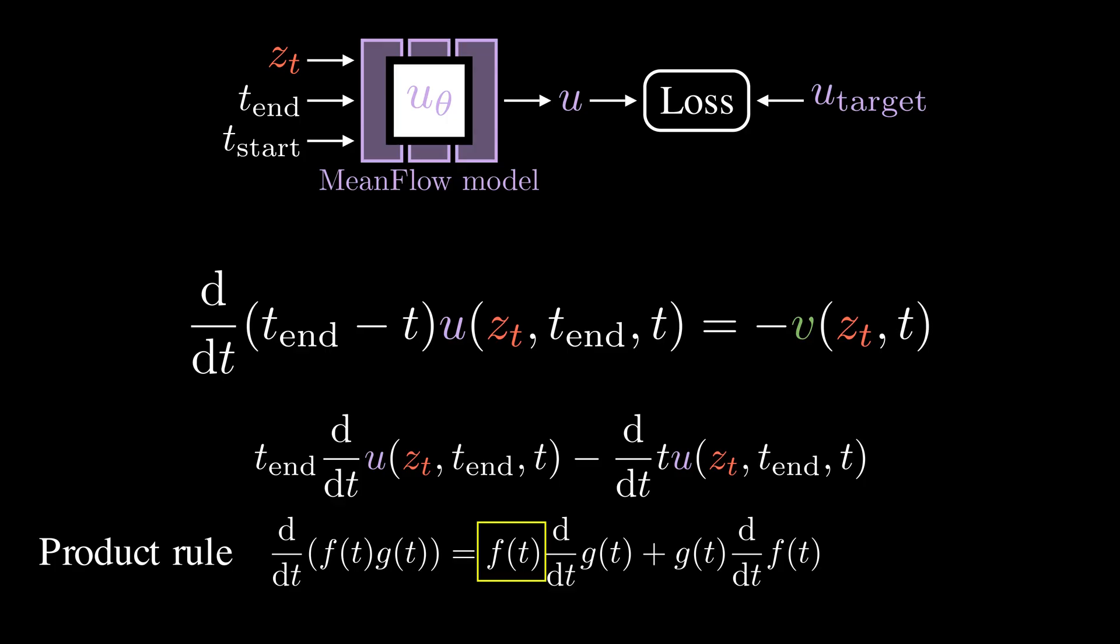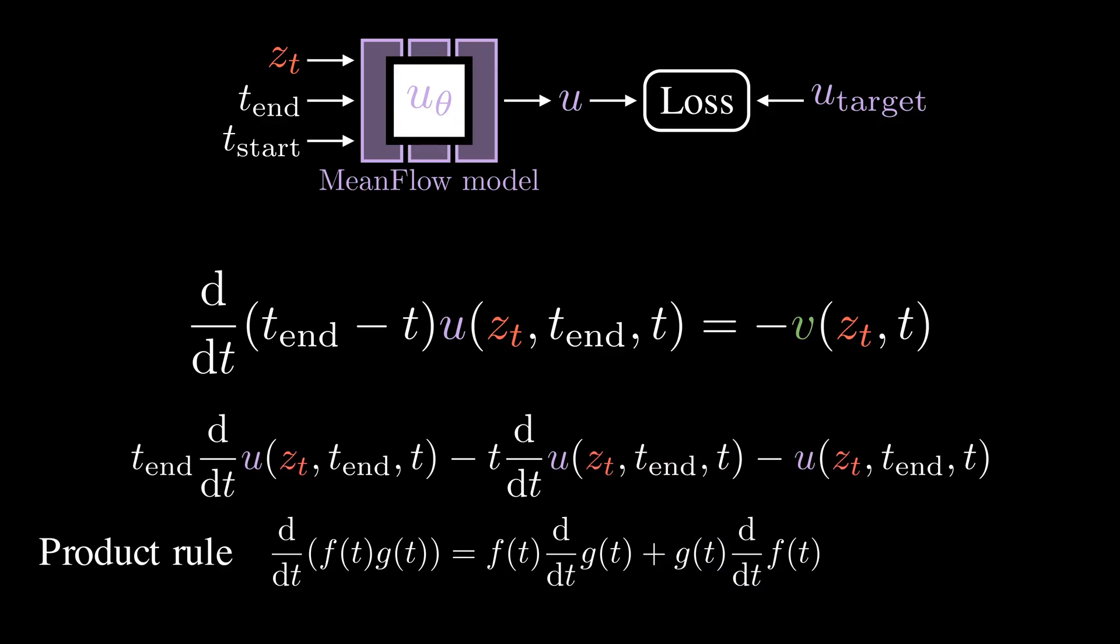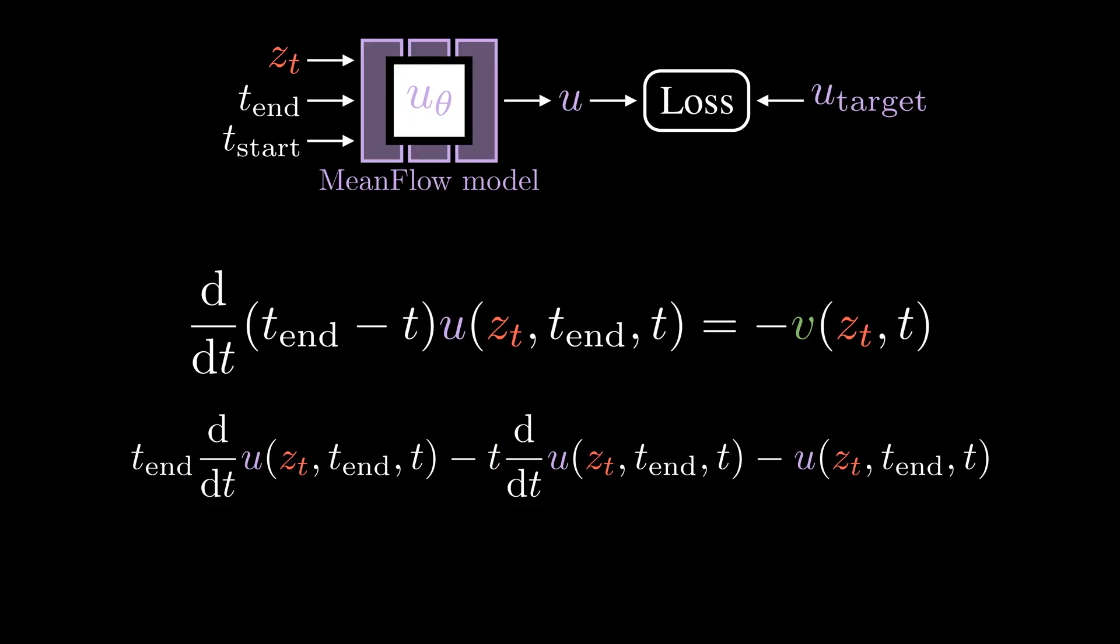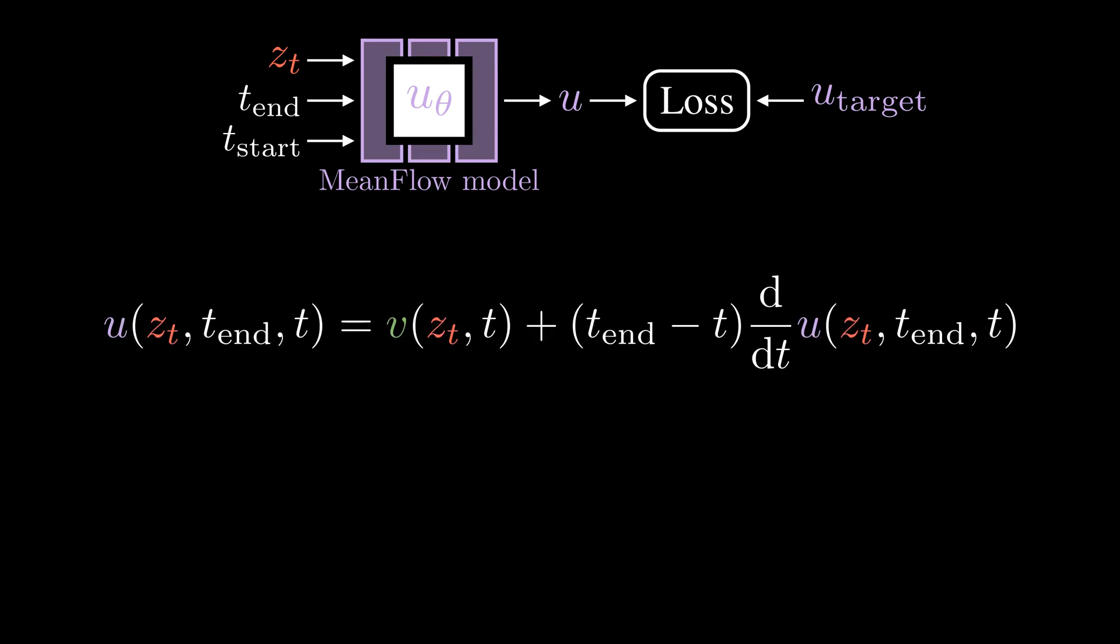Applying the product rule, we get these two terms. Now we can merge the time derivative. Let's plug this back and move the time derivative to the right hand side. This is called the mean flow identity. It establishes the relationship between the average velocity, the instantaneous velocity, and the time derivative.